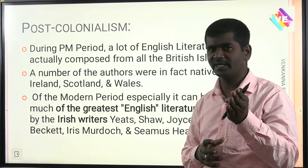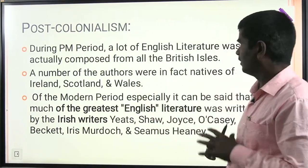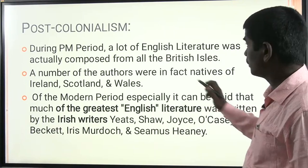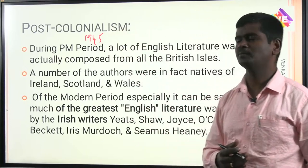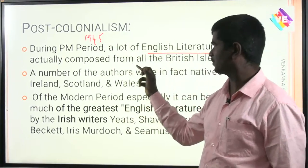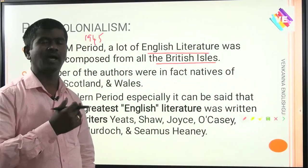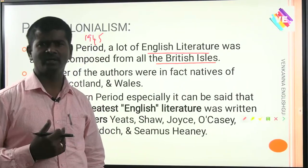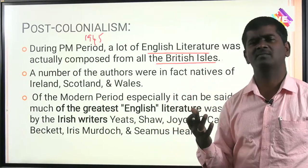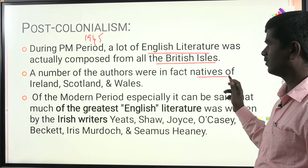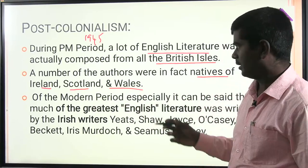During the post-modern period, literature written after World War 2 is nothing but post-modern literature. Post-colonial literature during the post-modern period — which means after 1945 — a lot of English literature was actually composed from all the British Isles. Not only just British writers; English literature was also written by writers who came from British Isles like India, the Caribbean islands, Africa, Australia, and other parts of the world.